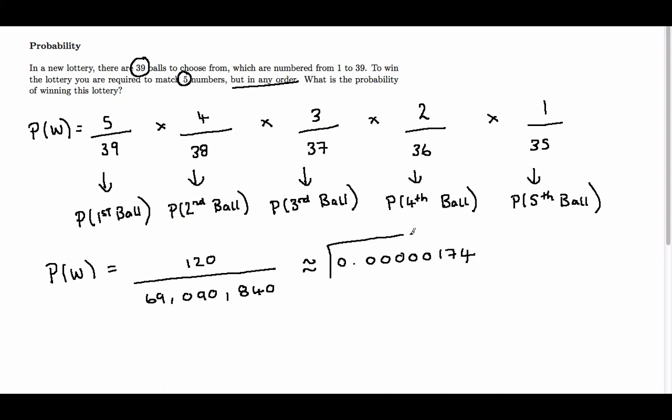So it's an incredibly small probability. The probability of winning this lottery is 0.0000174.